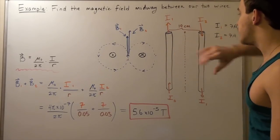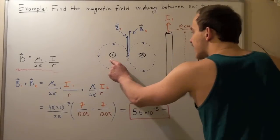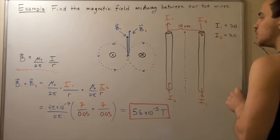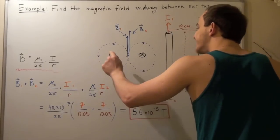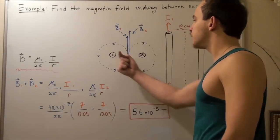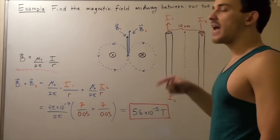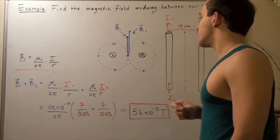Now this guy is simply wire number one, and this guy is simply wire number two. This circle and a dot simply means that our current is coming out of the board. And our circle and an X simply means our current is going into the board.